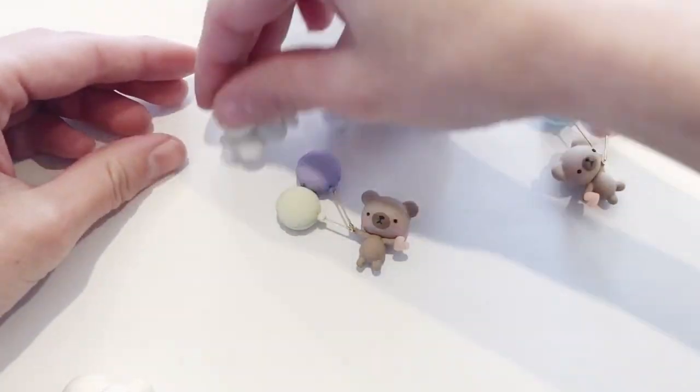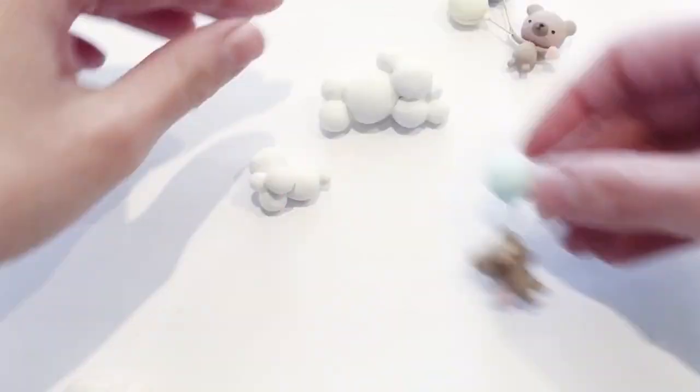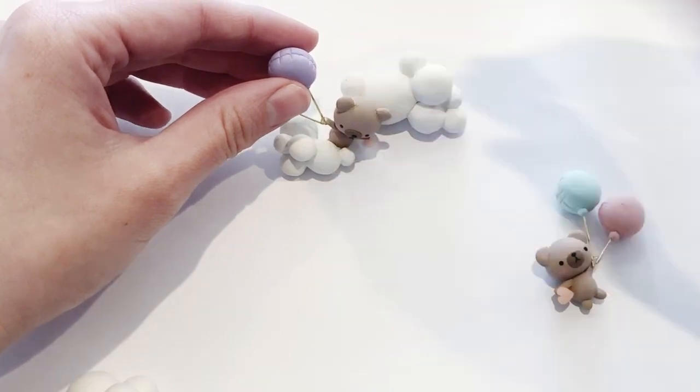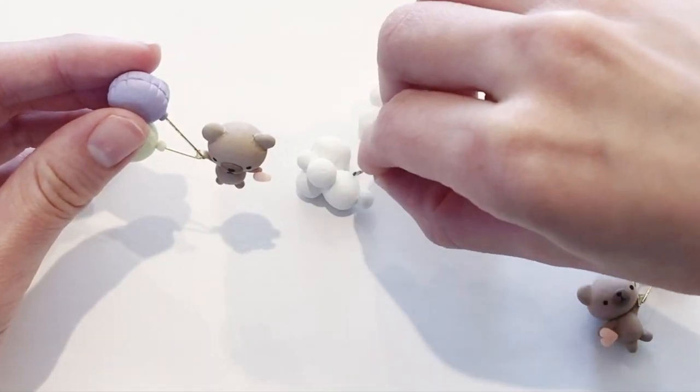Now, again, if you want to know how I created these little clouds, you need to look in the first video. But once you have your cloud and your bear pieces, you kind of position them wherever you want on the cloud and just create your little figurine however you want it to.